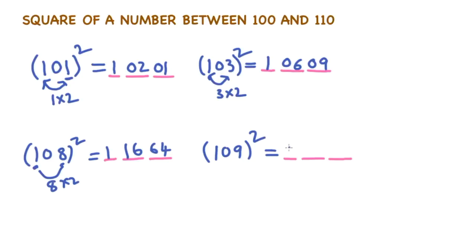109 whole square. This one is as usual. 9 square is 81. Multiply these two numbers. 1 into 9 is 9. Multiply with 2. 9 into 2 is 18.